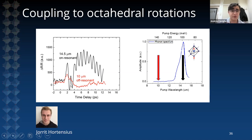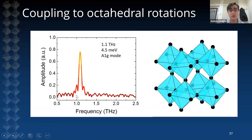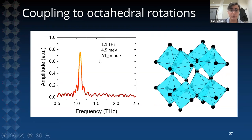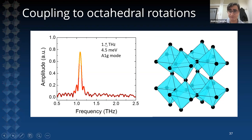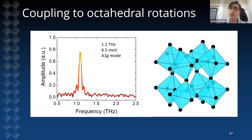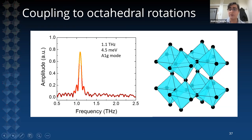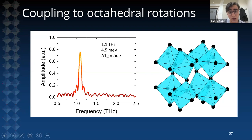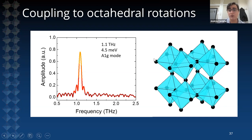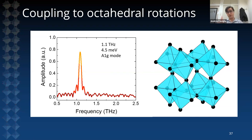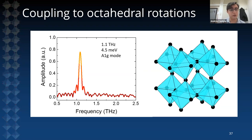If we switch the photon energy of our laser pump outside this resonance — at 10 microns for example — we observe an incoherent response that rapidly decays. This indicates that by resonantly exciting the 20 THz mode, we have induced a coherent oxygen octahedral rotation at 1.1 THz. These oxygen octahedral rotations are very important in oxides because they determine many microscopic parameters such as hopping integrals and magnetic exchanges.